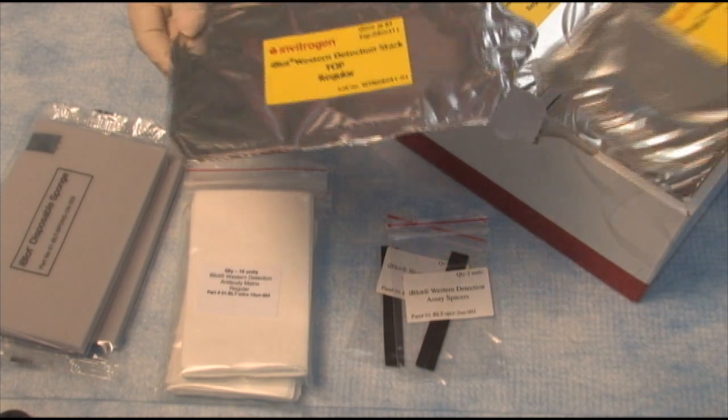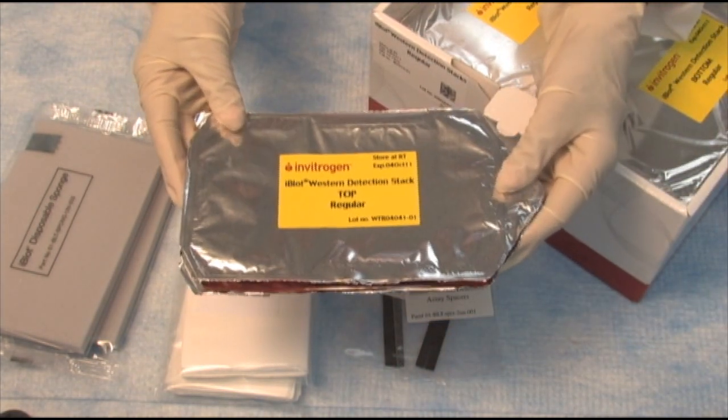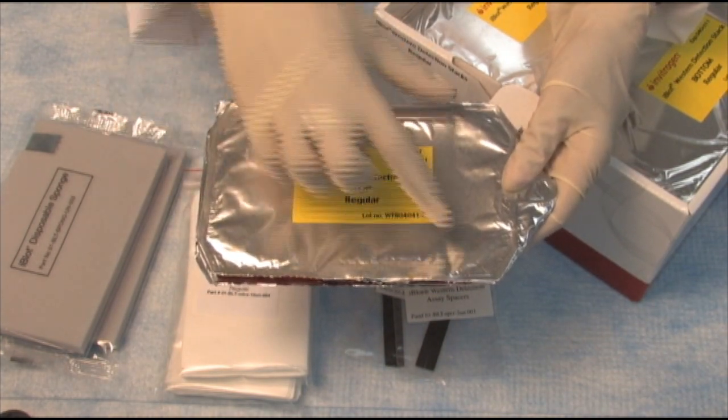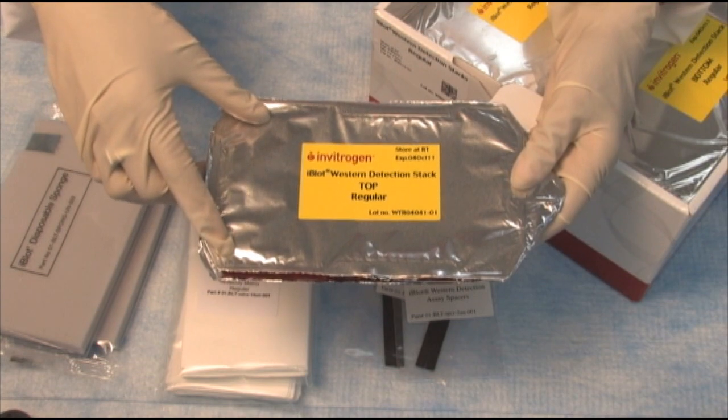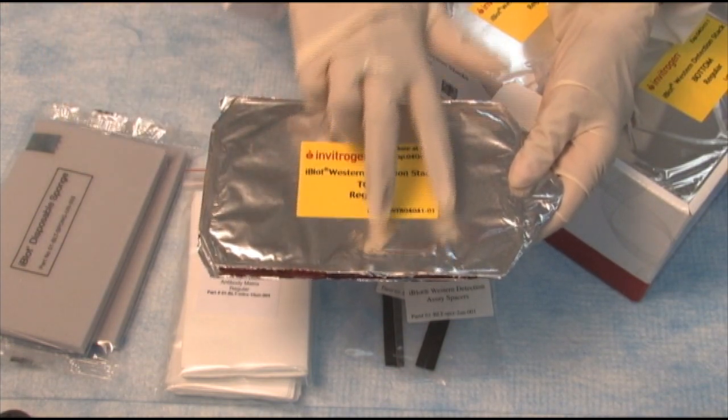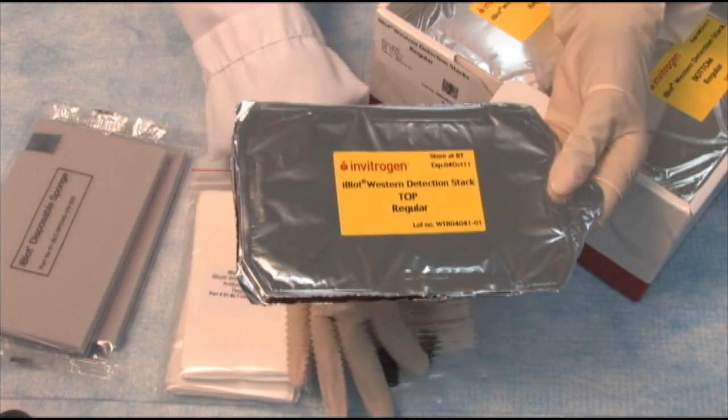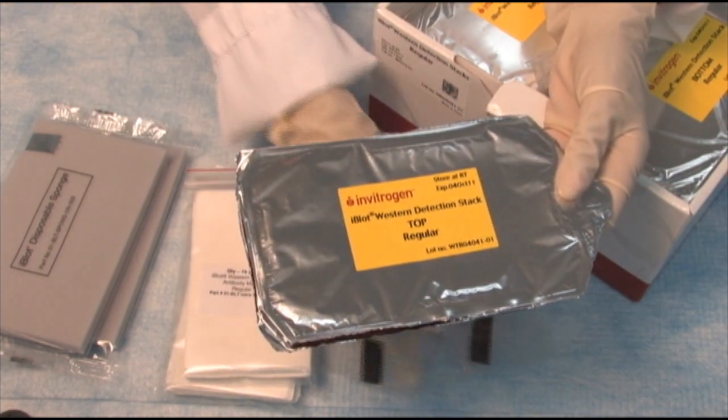And then we have the top and the bottom stacks. I have the regular size stacks here. So these allow you to do one midi-sized blot, or you can do two mini-sized blots. Or you can do multiple smaller blots and then use these spacers to separate them out.